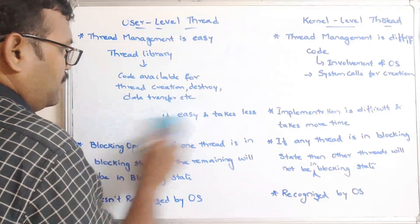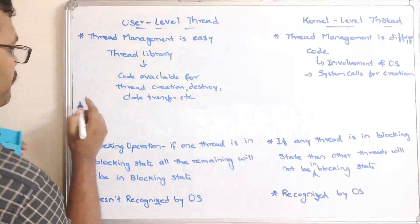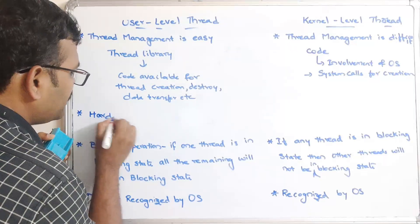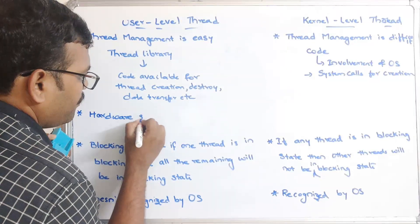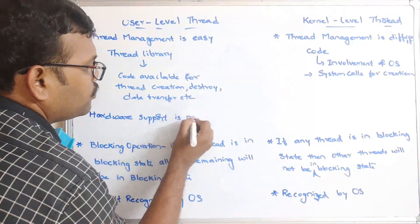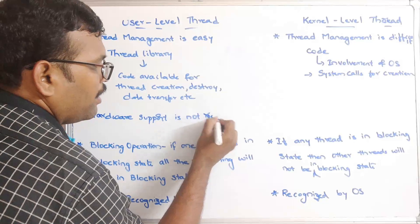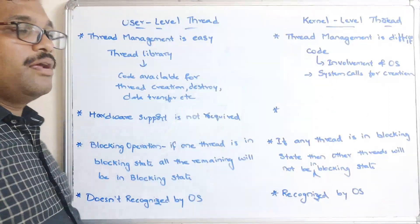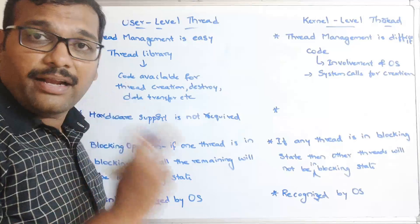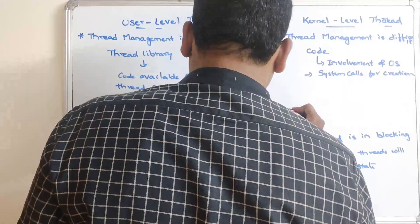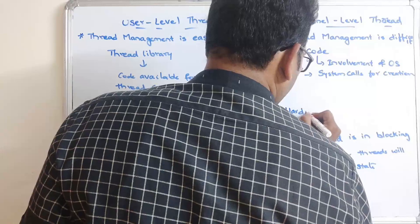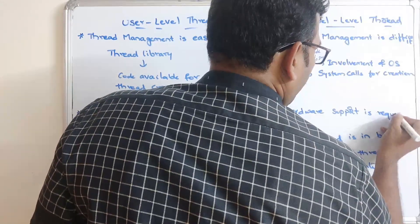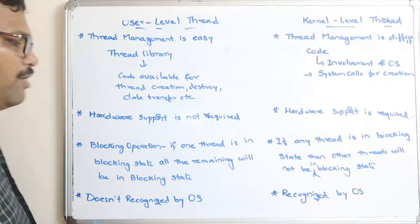The eighth difference is hardware support. For user-level threads, hardware support is not required. But for kernel-level threads, since threads are executed by the kernel, hardware support is required.